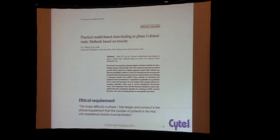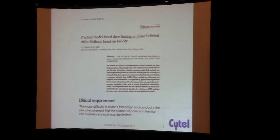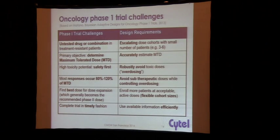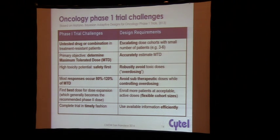I'm going to start with an overview of Phase 1 oncology trials. As most of you know, there is an ethical requirement in running these trials: we can't run them on large numbers of patients, and we have to be very careful about escalating doses. Usually we're talking about untested drugs or combinations, and very sick patients. The standard has been to escalate dose cohorts using a very small number of patients — so you have very little data to make inferences about which is the best dose.